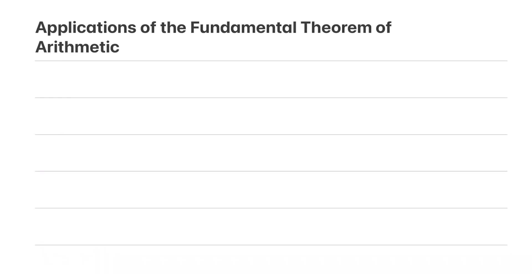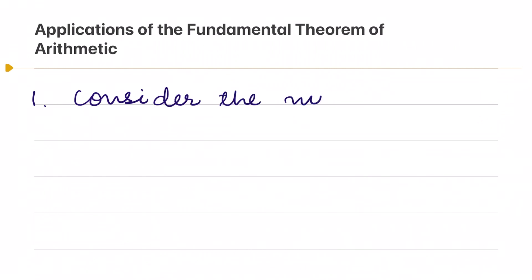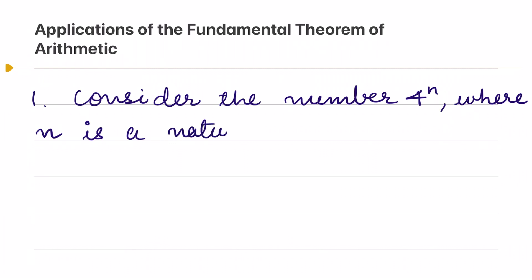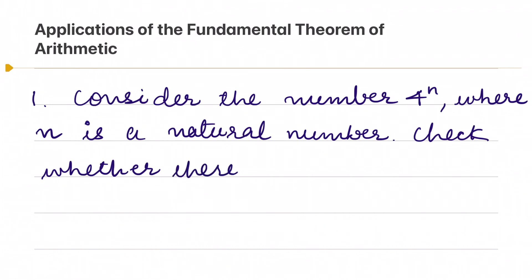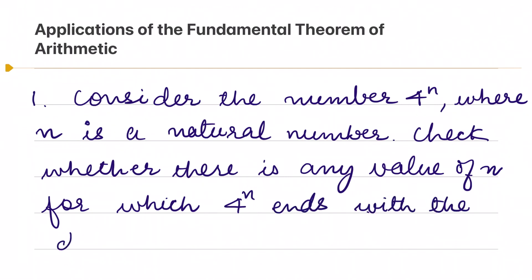Hello everyone. In our last video we covered the fundamental theorem of arithmetic. In this video we are going to do some applications of the fundamental theorem of arithmetic. First, let's consider the number 4 raised to the power n, where n is a natural number. We need to check whether there is any value of n for which 4 raised to the power n ends with the digit 0.